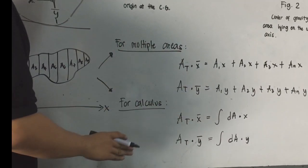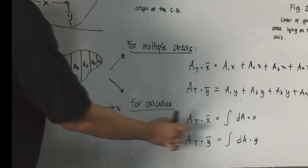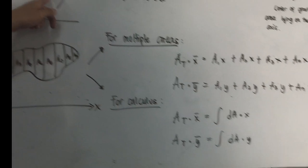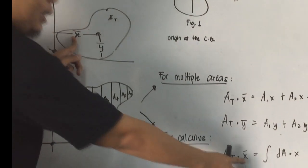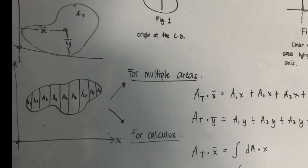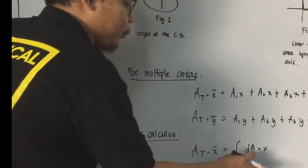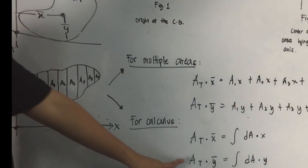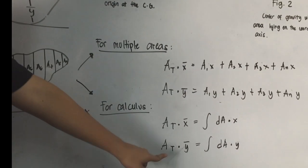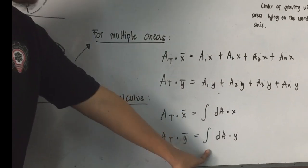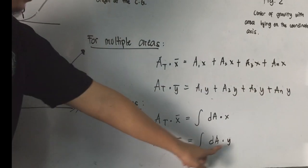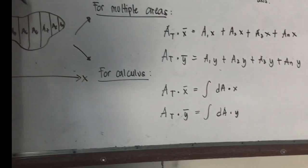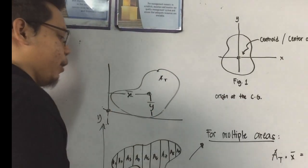This is our simplified formula using calculus: the total area times bar x equals the integral of a differential area times x. Instead of area 1, area 2, area 3, we use a differential area. For the y-coordinate, the total area times bar y equals the integral of the differential area times y. These are the key formulas for finding bar x and bar y — the important factors in determining the centroid.